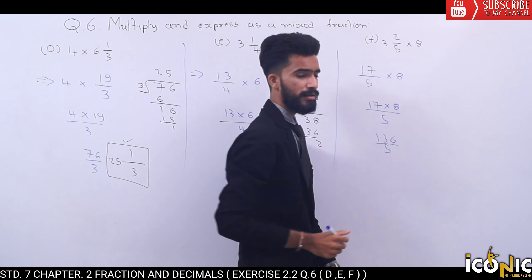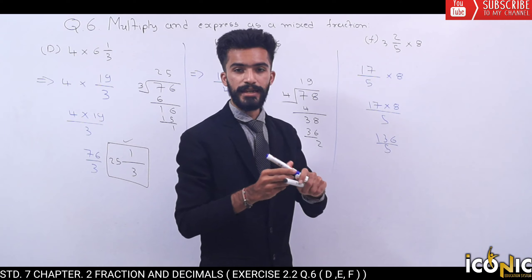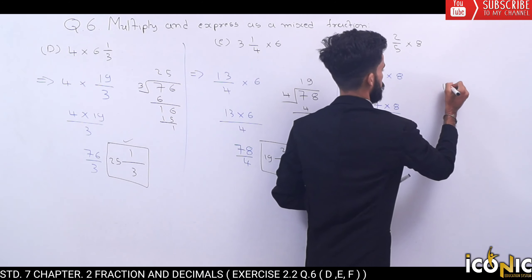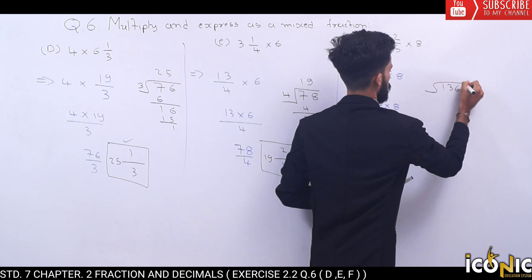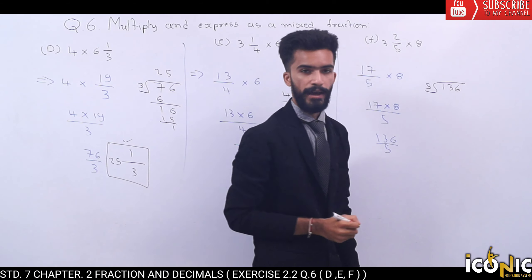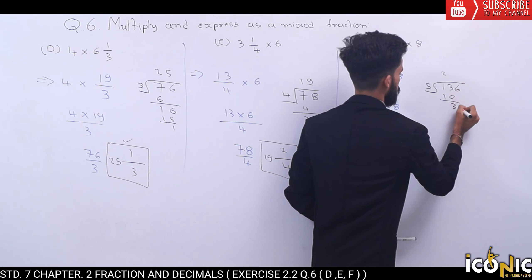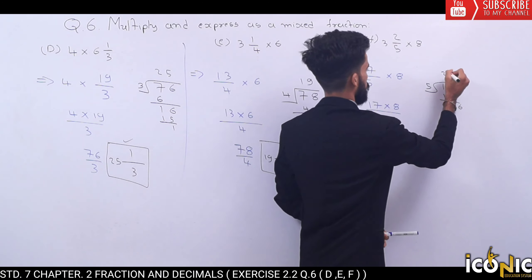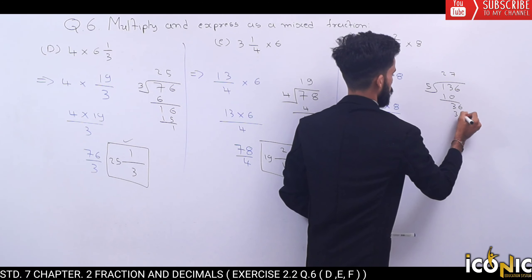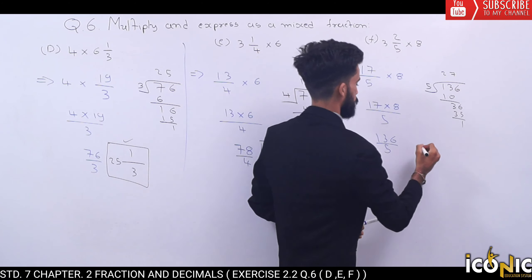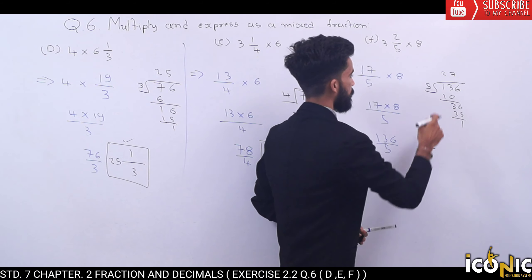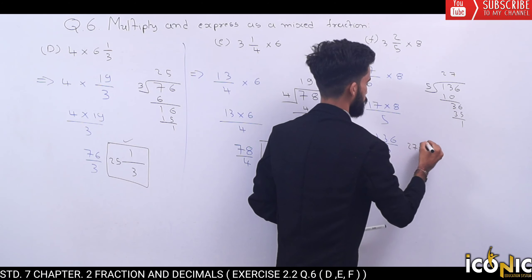17 times 8 is 136 upon 5. Again we have to do the same steps. 136 divided by 5. 5 times 2 is 10, remainder 3. Here comes 6. 5 times 7 is 35, remainder 1.